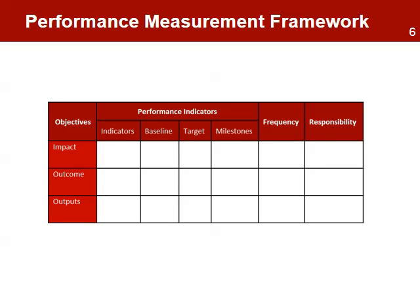In results-based project management, the logical framework matrix moves up one step further and incorporates some changes that will allow a better structure to manage and monitor the project. The performance measurement framework adds the following elements: a baseline, a target, milestones, frequency of creating the data, and responsibilities for collecting the data.